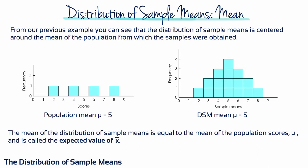From our previous example, you can see that the distribution of sample means is centred around the mean of the population from which the samples were obtained. The mean of the distribution of sample means is equal to the mean of the population scores — in this example, they both equal 5. The mean of the distribution of sample means is called the expected value of x-bar.